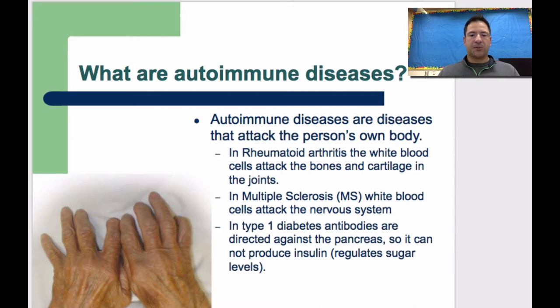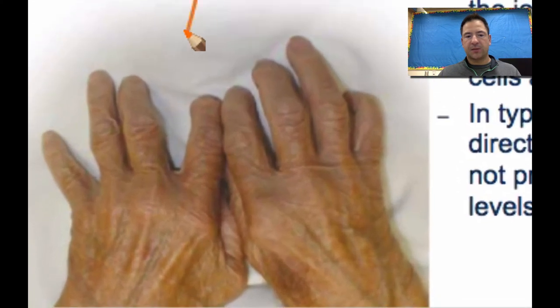So some other examples of these autoimmune diseases that we can look at. One of them is rheumatoid arthritis. And rheumatoid arthritis is where the white blood cells in the body are actually going to start attacking the bones and cartilage in the joints. So if you take a look at this diagram right here, you'll actually see rheumatoid arthritis there.